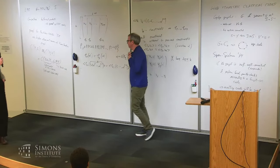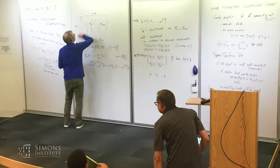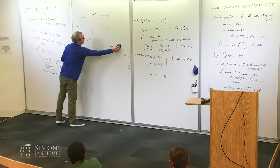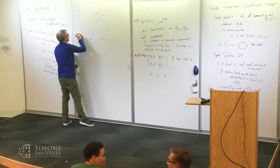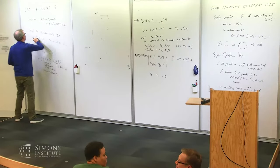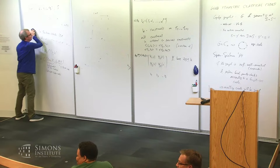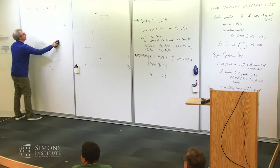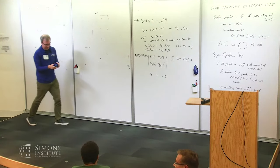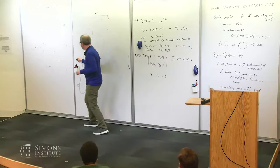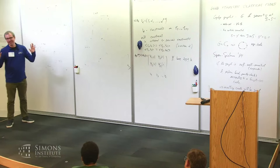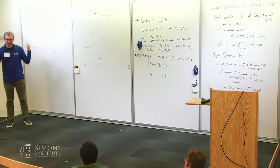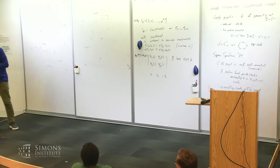Next up we have Ken Brown from Duke who will tell us about something on the board. I'm Ken Brown from Duke. I have a few theorems, but I don't usually try to solve theorems — the main reason I'm here is I'd like people in this audience to solve theorems for me. So let me talk about problems.